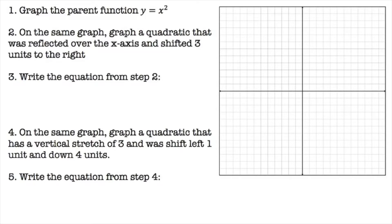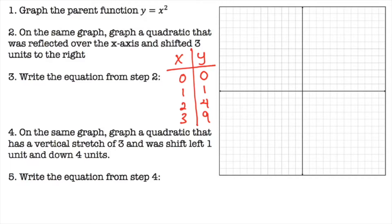For this question, you're going to graph the parent function y = x². Making a t-chart helps — all parent function parabolas start at the origin. Plug in x = 0, 1, 2, 3: 0² = 0, 1² = 1, 2² = 4, 3² = 9. Graph those points (0,0), (1,1), (2,4), (3,9), then use the axis of symmetry to reflect points to the opposite side and draw your parabola.